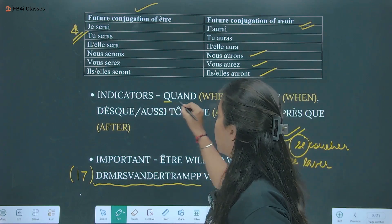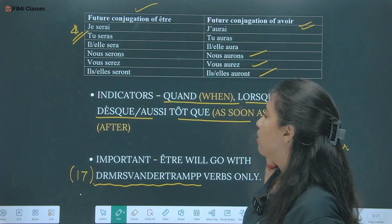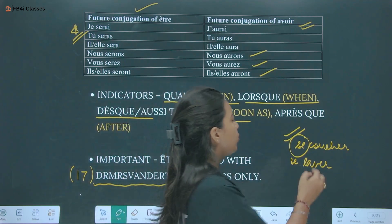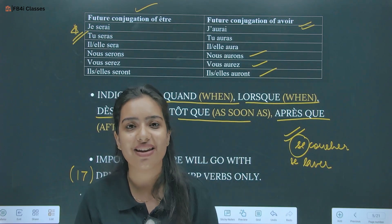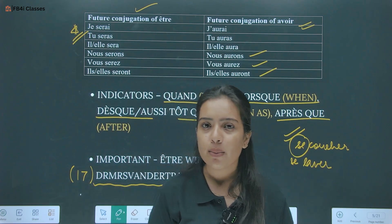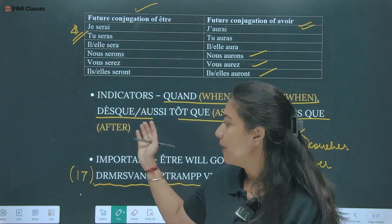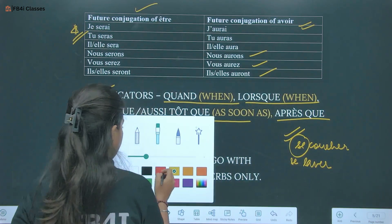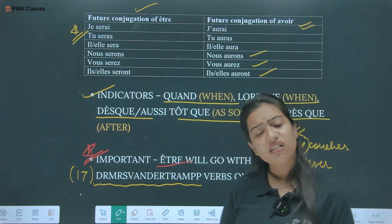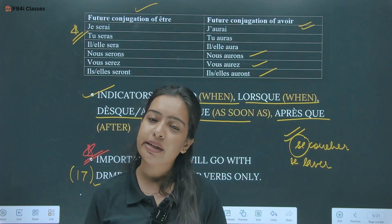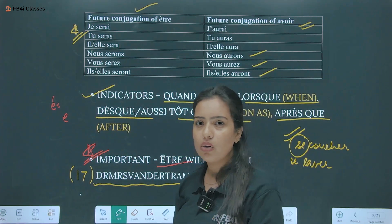Indicators of this tense are: quand (when), lorsque (when), dès que (as soon as), après que (after). Also note that where être is used, we always do accord — add an extra e or s as needed. That's all about accord. With these indicators and the formation rule, you are sorted for this tense.